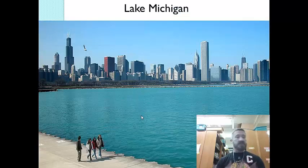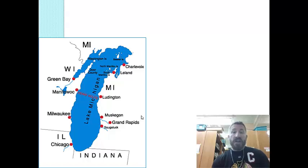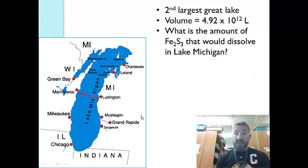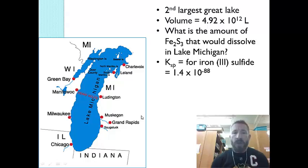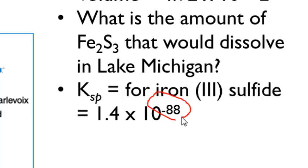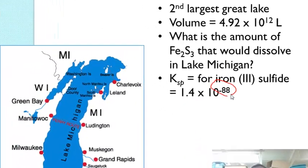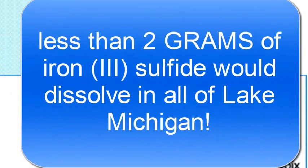Consider Lake Michigan — the seventh largest lake by volume in the world and the second largest Great Lake, with a volume of 4.92 × 10¹² liters. If we took that volume and knew the KSP of iron(III) sulfide, we could figure out how much would dissolve. The KSP for iron(III) sulfide is 1.44 × 10⁻⁹⁸ — a tiny number. Using that entire volume, you'd find that the amount of iron(III) sulfide you could dissolve in Lake Michigan is actually less than 2 liters.